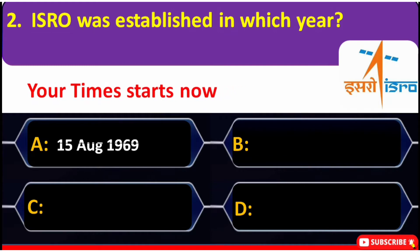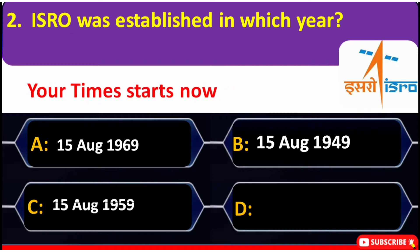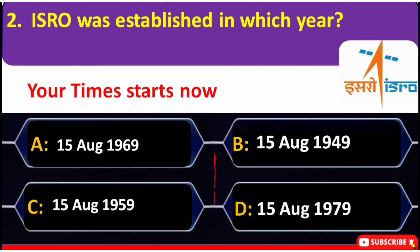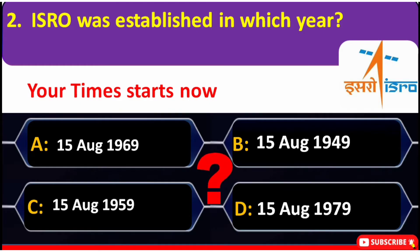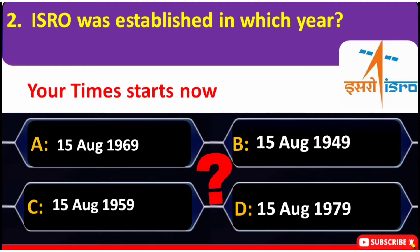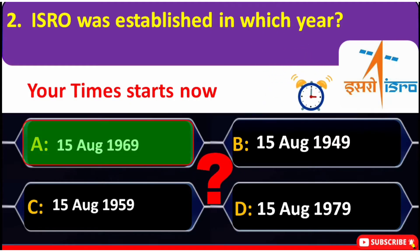ISRO was established in which year? A. 15th August 1969, B. 15th August 1949, C. 15th August 1959. Correct answer is A — 15th August 1969.